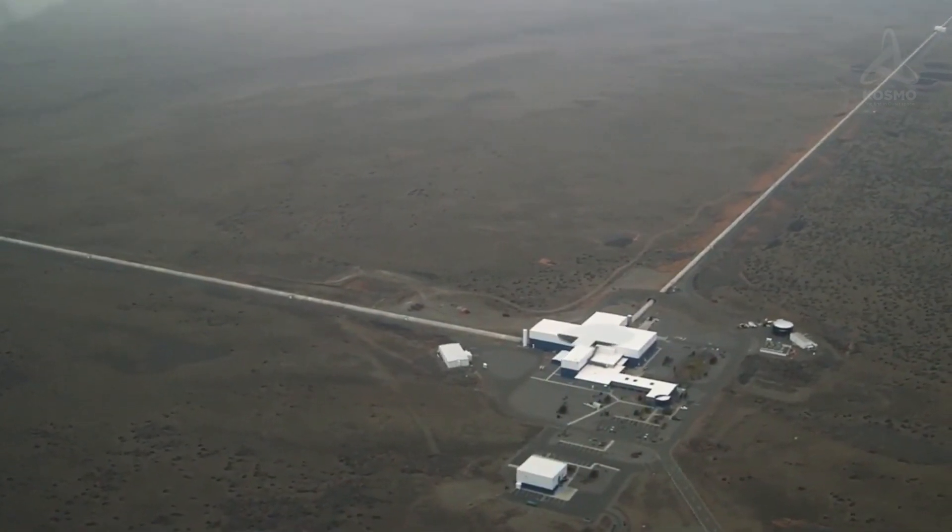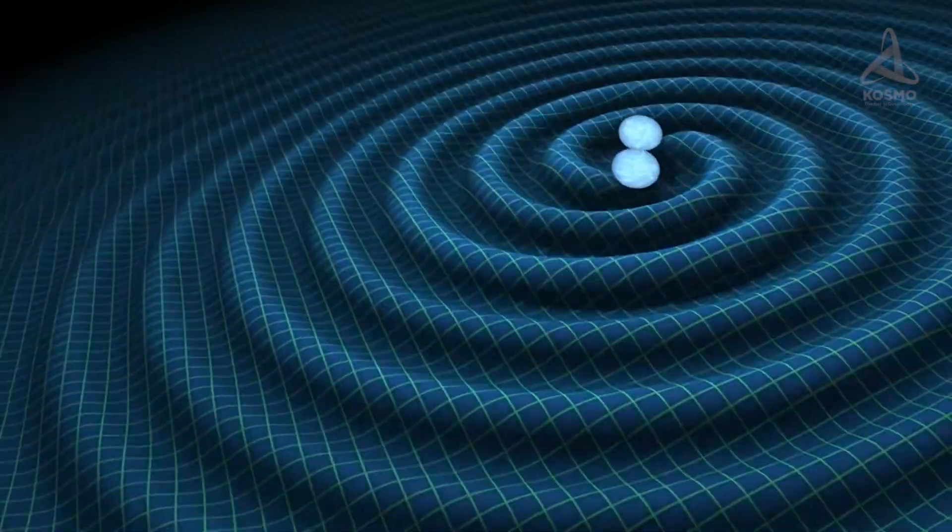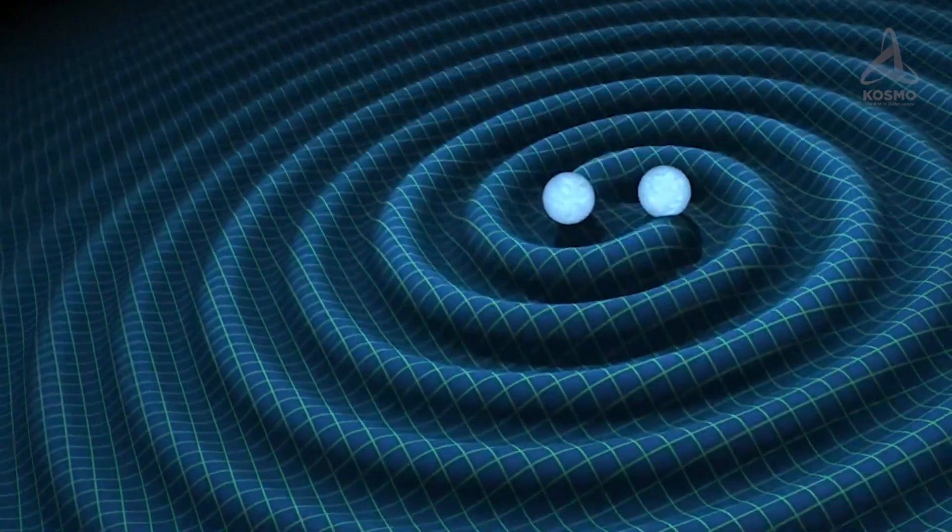In 2015, thanks to the LIGO Observatory, the first gravity waves were detected in the form of space-time perturbations, which may be described as ripples in space.